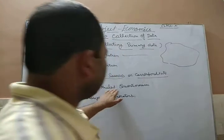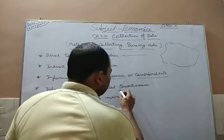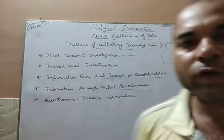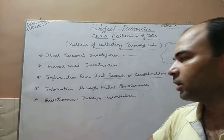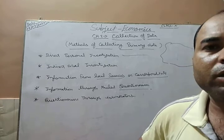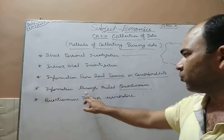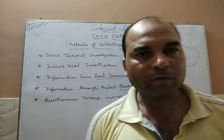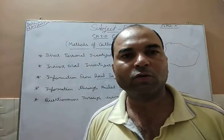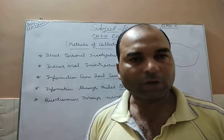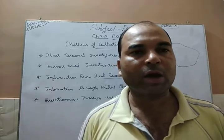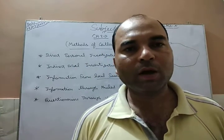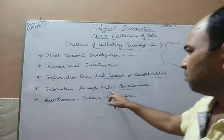The next method is information through mail questionnaire. In this situation, the investigator prepares a questionnaire — a list of questions on paper — and distributes it to respondents. For example, just like an exam question paper is distributed to students and information is collected from them. Similarly, in villages or markets, questionnaires are distributed, people fill them in, and the information is extracted.